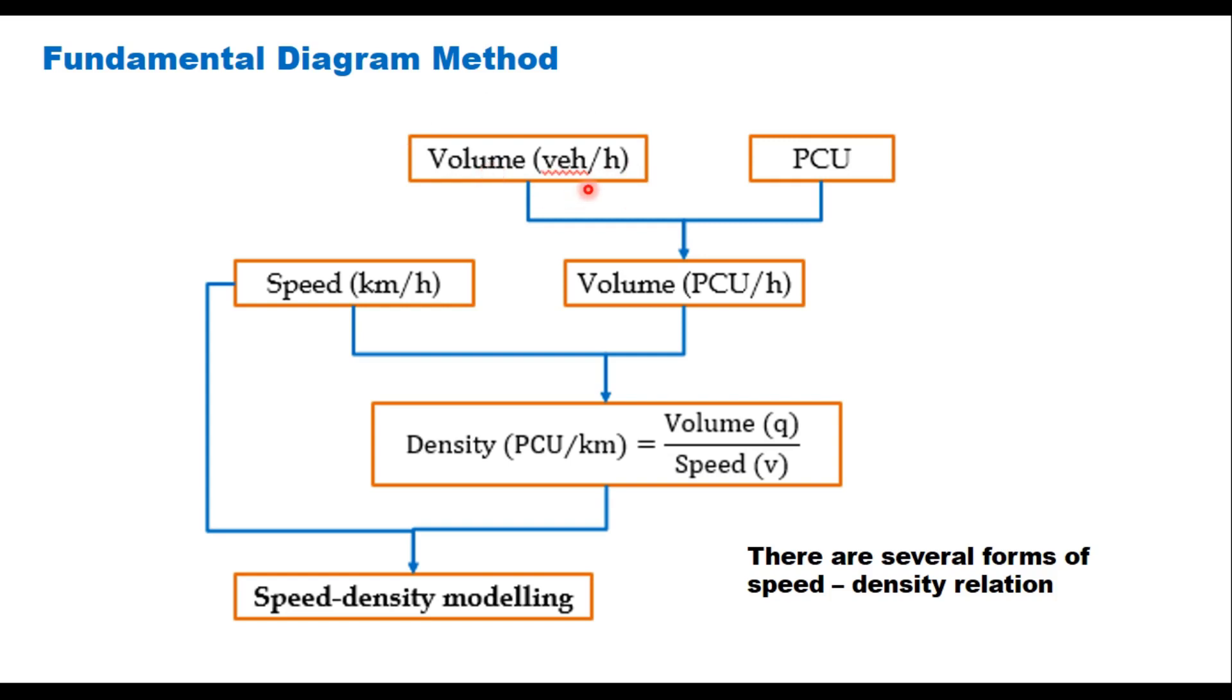In case of mixed traffic you need to convert this into PCU. So you estimate PCU factor for individual type of vehicle and convert vehicles per hour into PCU per hour.